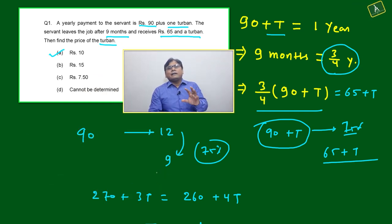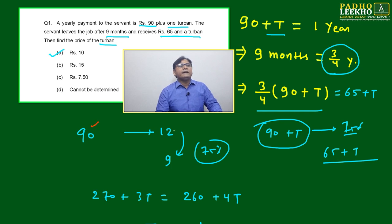Just will focus on all these numbers: 90, then 12 months, 9 months, 65 - all these we will focus. 90, this total whatever you will get will be more than 90, something more than 90. Maybe turban cost maybe 10 rupees, 15 rupees, or 7 rupees or whatever will be there, it will be more than 90.